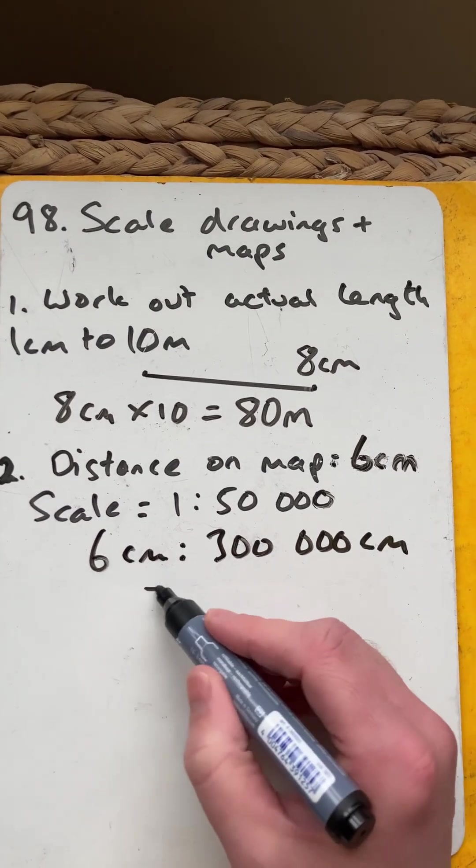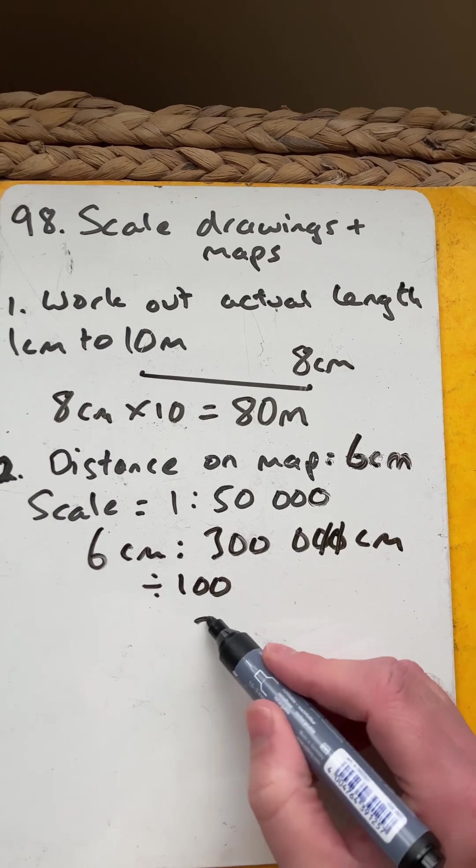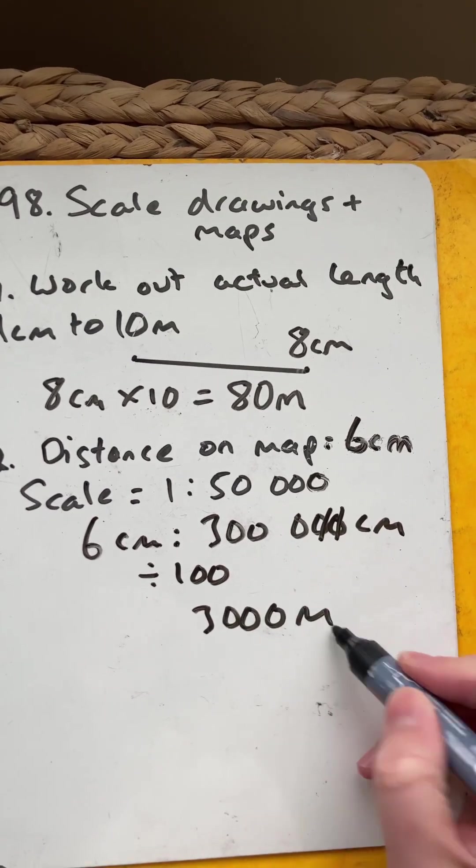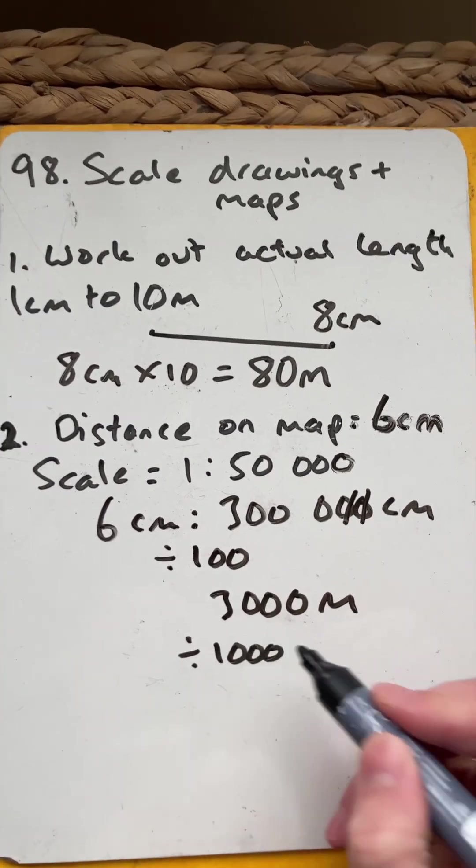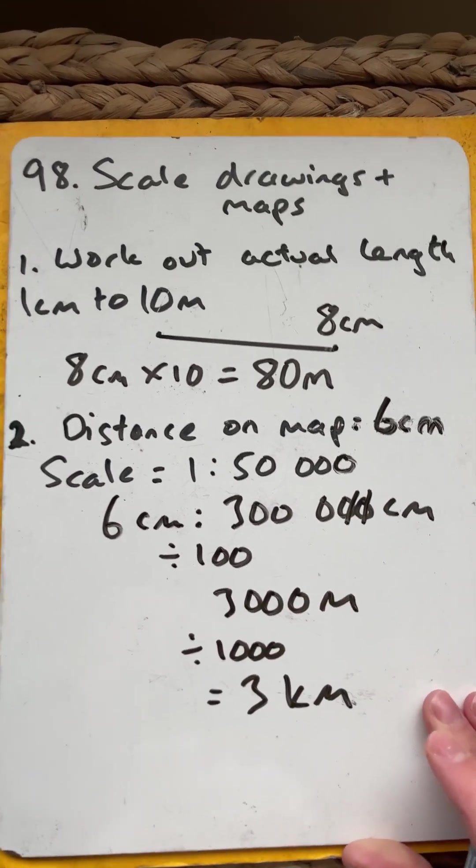So we're going to convert that into metres. So I'm going to drop two of those, so that's 3,000 metres. Divide that by 1,000 to convert it into kilometres. It'll equal 3 kilometres. So there we go.